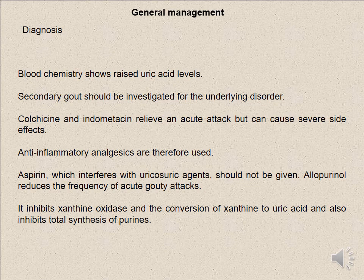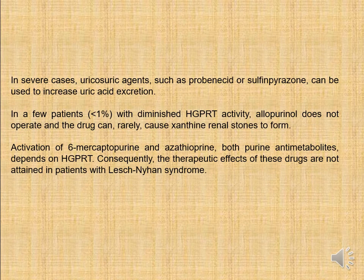Management of gout: diagnosis depends on blood chemistry showing a rise in uric acid levels. Secondary gout should be investigated for an underlying disorder. Colchicine and indomethacin relieve acute attacks but can cause severe side effects; anti-inflammatory analgesia is therefore used. Aspirin interferes with uric acid excretion. In severe cases, uricosuric agents such as probenecid or sulfinpyrazone can be used to increase uric acid excretion. Allopurinol is also used to reduce uric acid production.